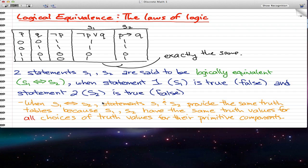So when s1 is logically equivalent to s2, statements s1 and s2 provide the same truth values or true same truth tables because s1 and s2 have the same truth values for all choices of truth values for their primitive components.